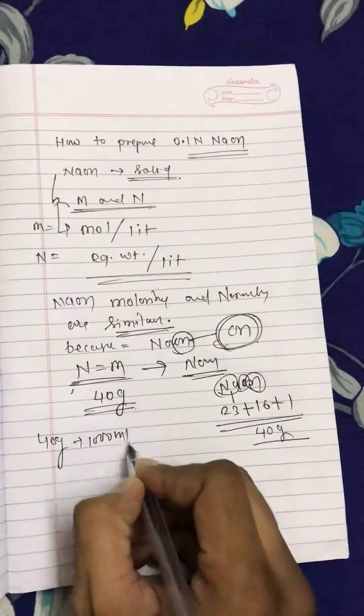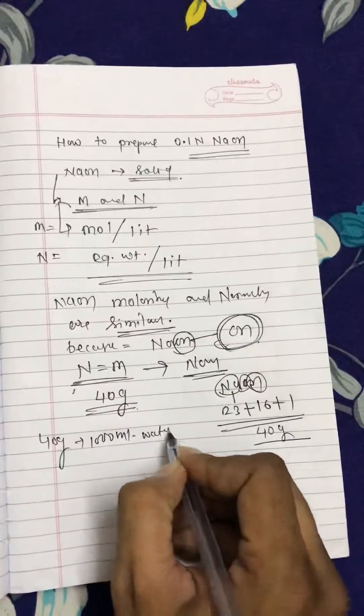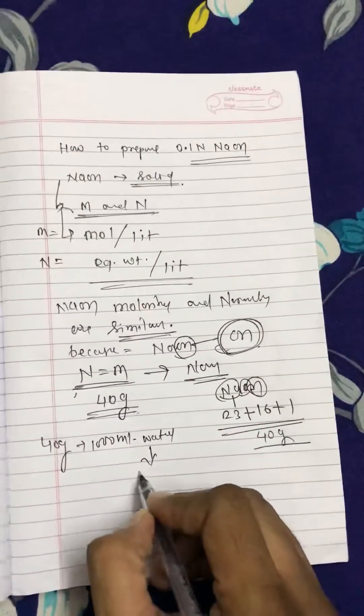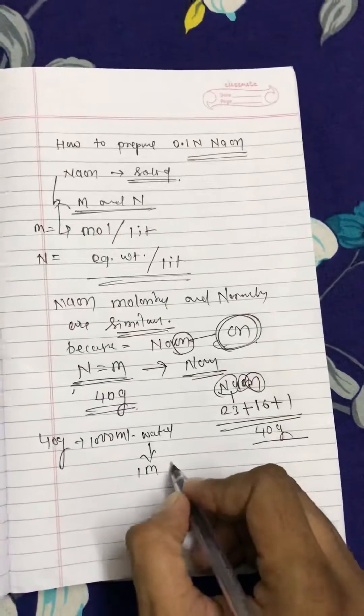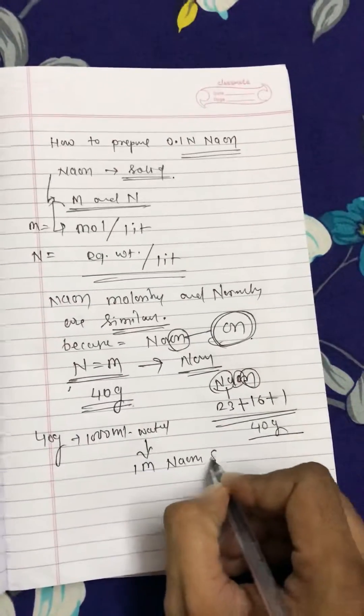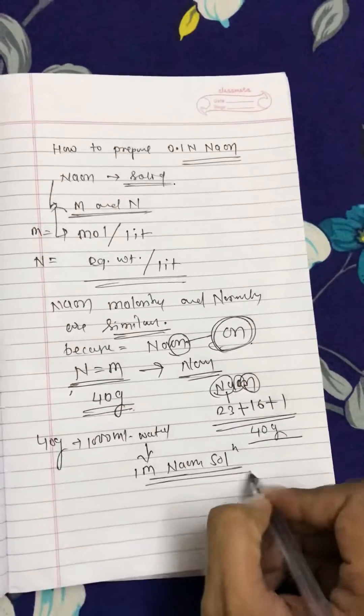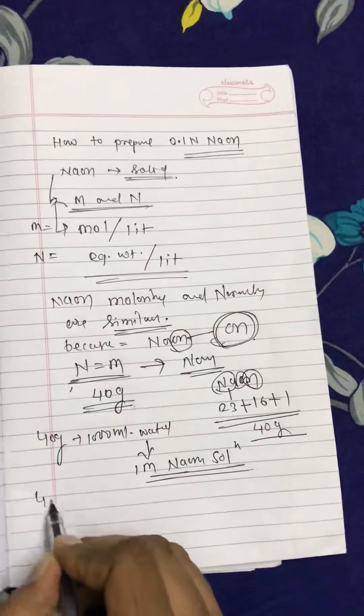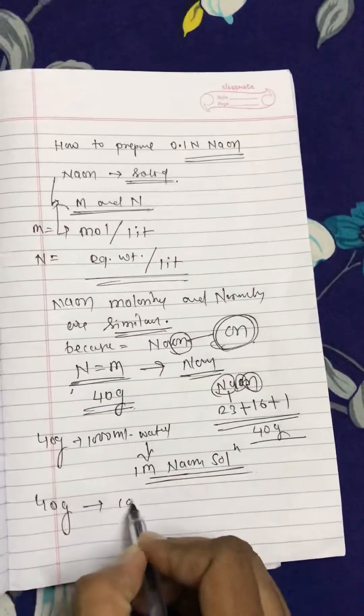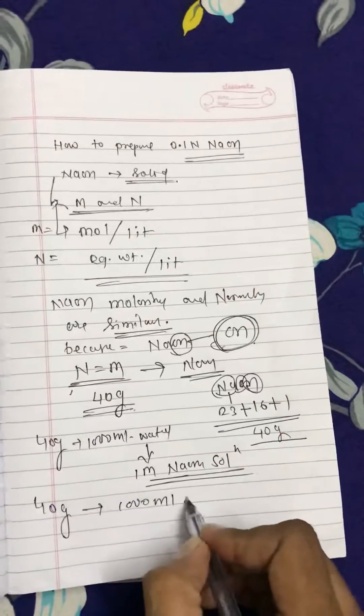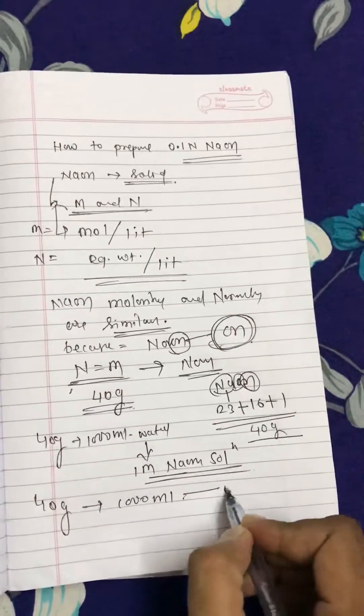Take 40 grams in 1000 ml of water to make one molar NaOH solution. So 40 grams in 1000 ml water makes one molar solution.